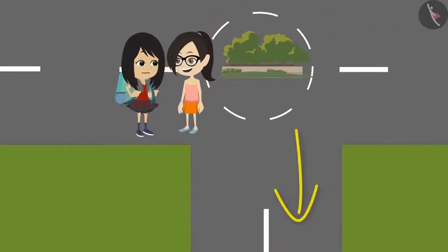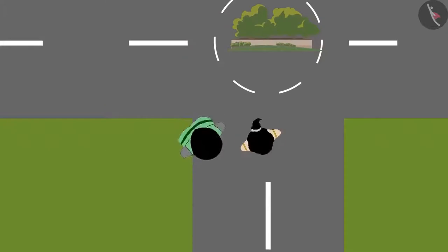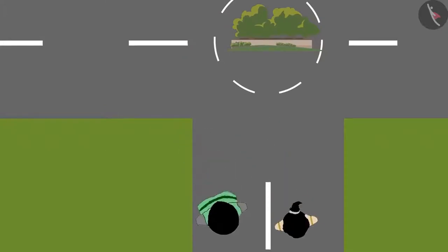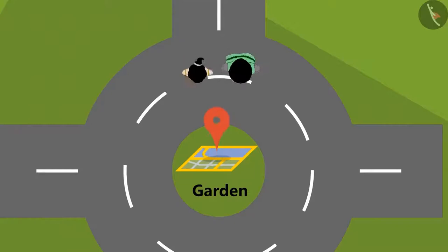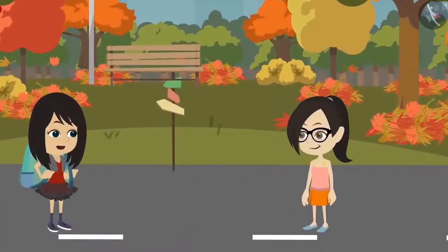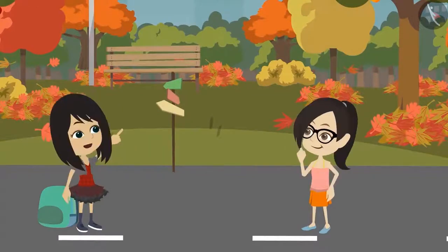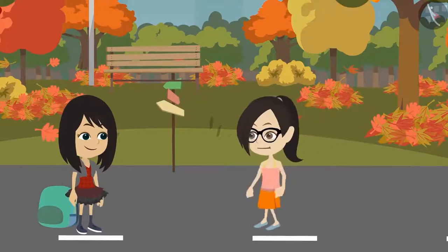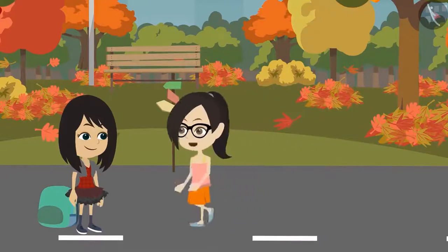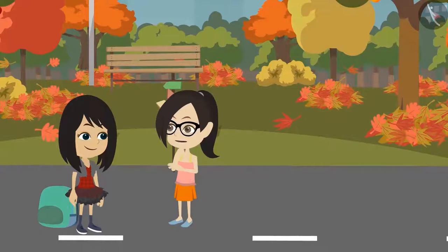Yes, now we are on the correct route. Let's take a right turn from here. Vandana, where are you going? We should check with the directions given by madam. Look, there is a garden over there and a road to the right and left. Then which road should we take? Madam has not mentioned anything about a garden. I am not able to figure this out.